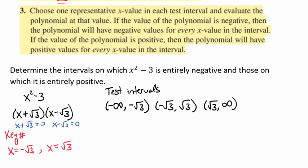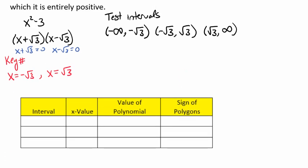In each of these test intervals, we want to choose a representative x value of the polynomial and evaluate it. We're going to use a table to help us out. A number between negative infinity and negative radical 3 would be negative 3. A number between negative radical 3 and positive radical 3 would be 0. And a value between radical 3 and infinity would be 3 or even 5.